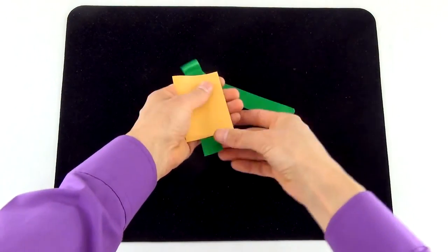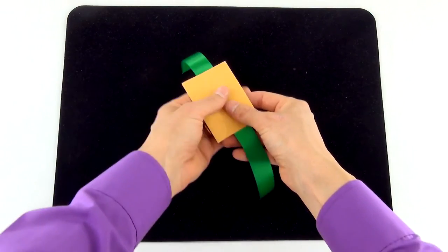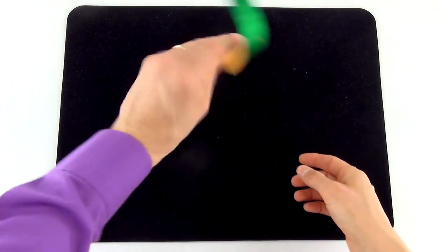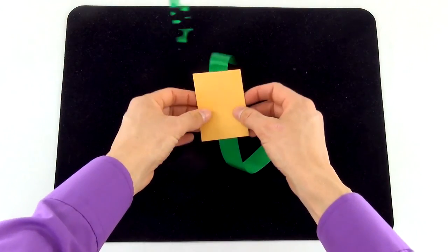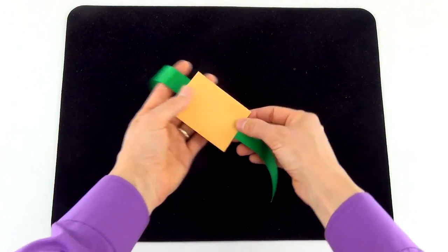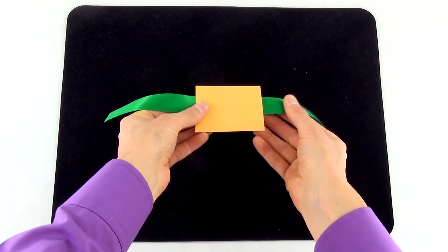To enhance the illusion, you can now briefly show both sides of the envelope by using your fingers underneath to cover the hole in the back of the envelope. Once you've shown the envelope on both sides, hold it horizontally in your hands as shown here.